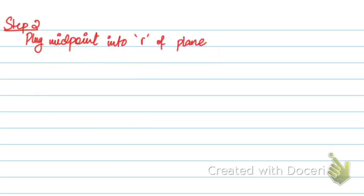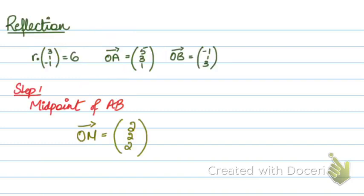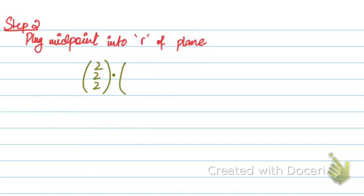Step two is I plug in the midpoint into the R of the plane. The midpoint, that was 2, 2, 2. R of the plane, the plane is R dot 3, 1, minus 1 equals to 6.